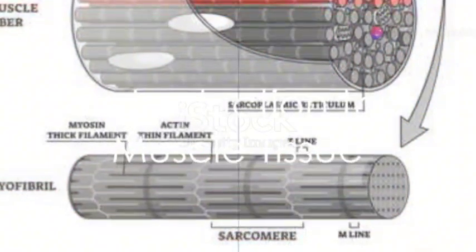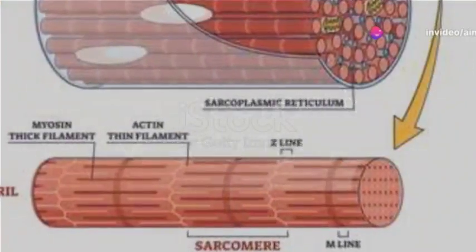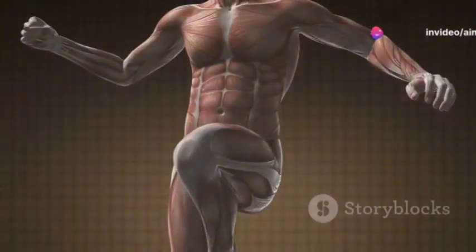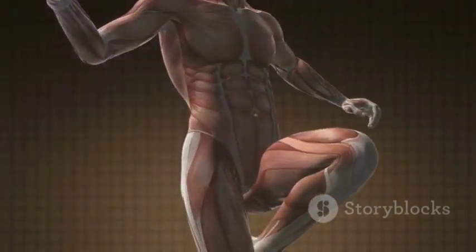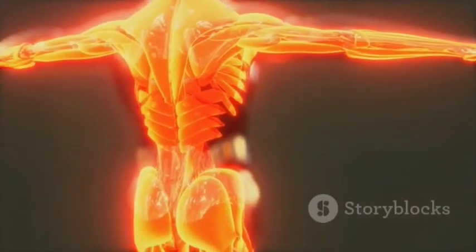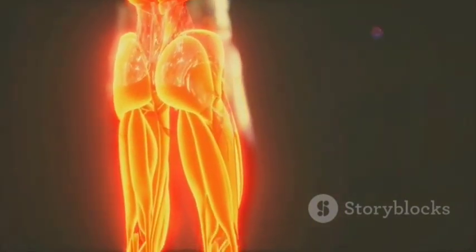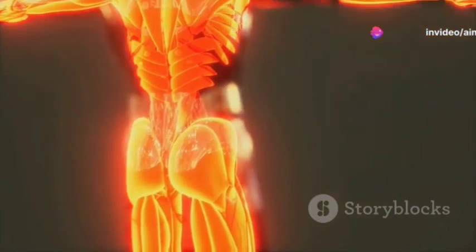Have you ever wondered how our body moves or how our heart keeps beating? The answer lies in the intricate workings of muscle tissue, a vital component of our well-being. In the human body there are three main types of muscle tissue: skeletal muscle, cardiac muscle, and smooth muscle. Each of these plays a unique and crucial role in our health and function.